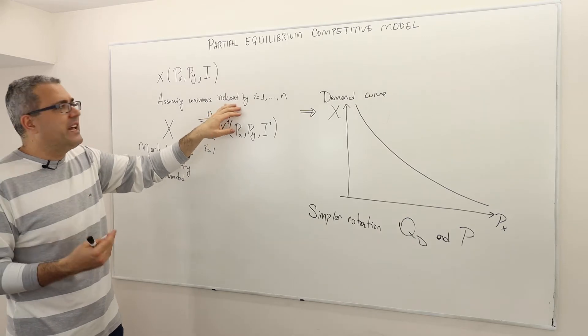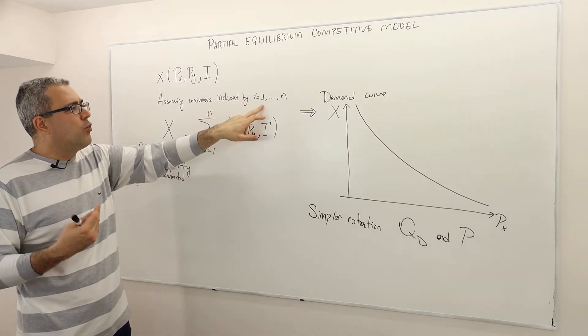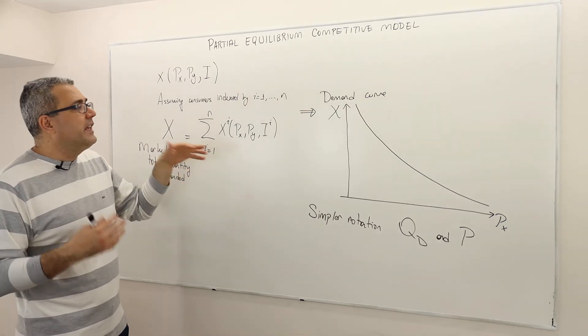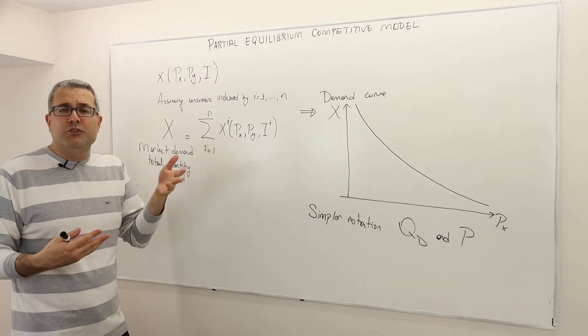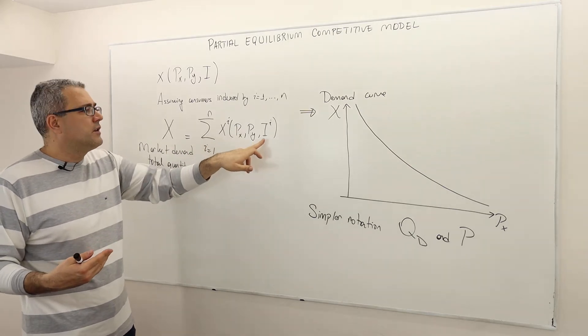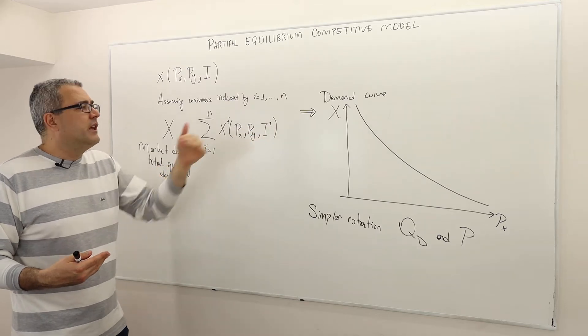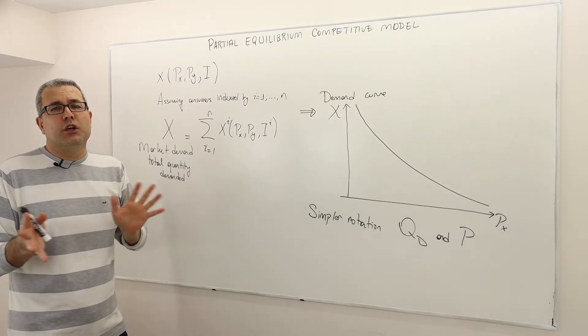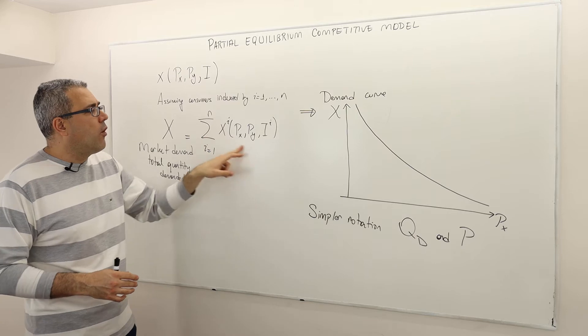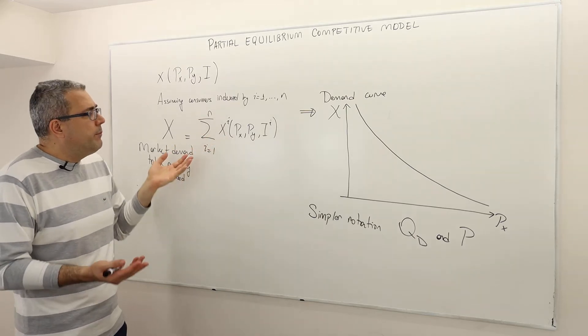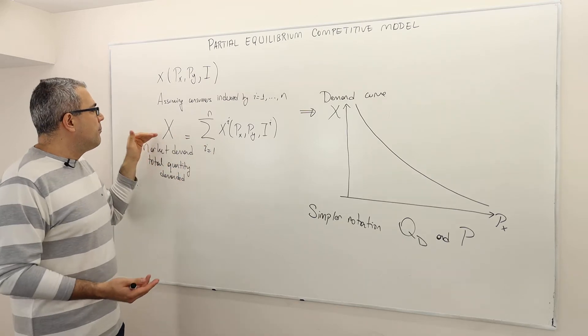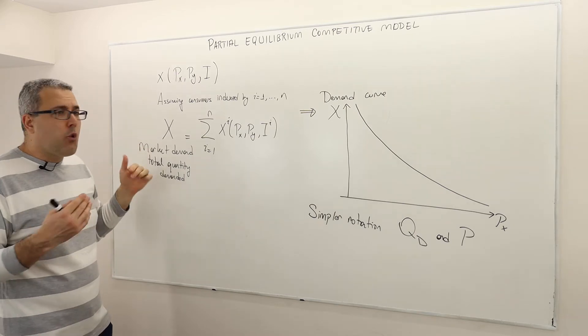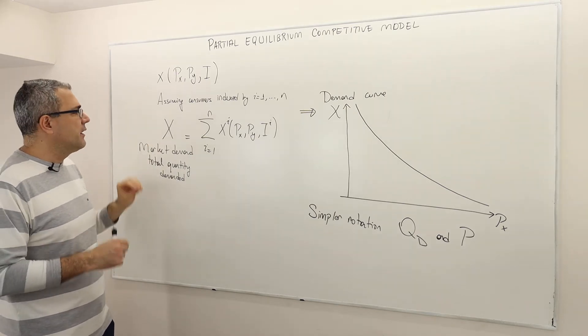How do we do that? Very simple. Let's index each consumer as i from one to N. So we have N many consumers and we know how to derive each consumer's demand given his or her utility function, given his or her income. So I superscript i means the individual i's income level, and the PX and PY are the price of the goods available in this market. We know how to derive all individuals' demand curves. And what we basically do, just sum them up. By this, we basically get the aggregate market demand or total quantity demanded for good X in this market.